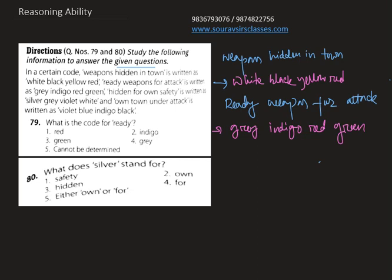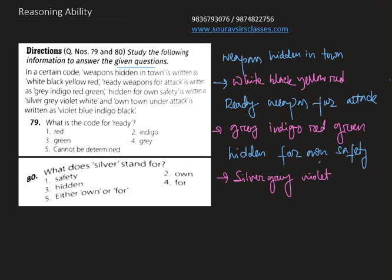'Hidden for own safety' is written as 'silver gray violet white.' And lastly, 'own town under attack' is written as 'violet blue indigo black.'